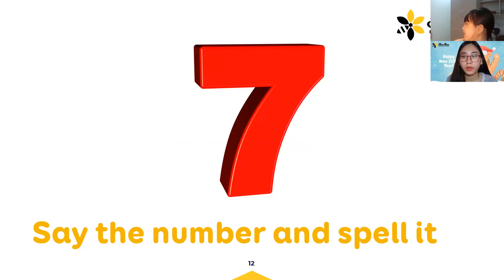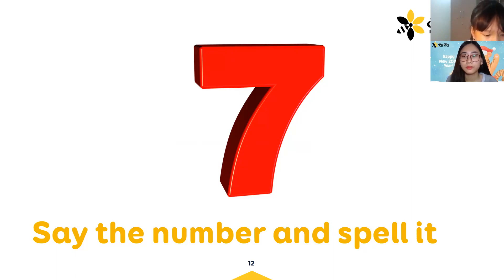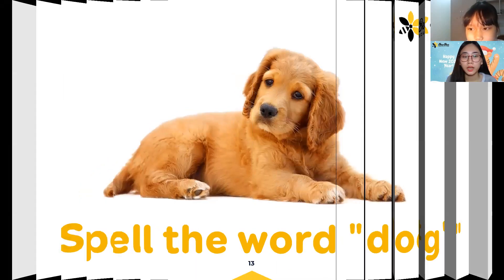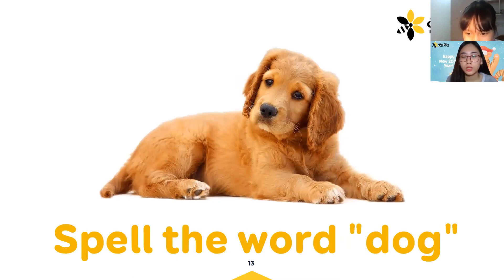Can you spell for me the word seven? S-E-V-E-N. Okay, thank you very much. And the next: can you spell for me the word dog? D-O-Z.